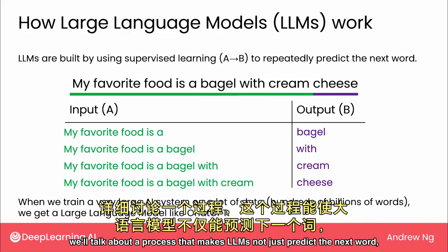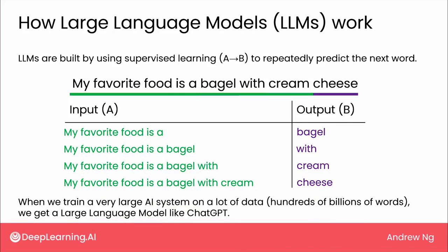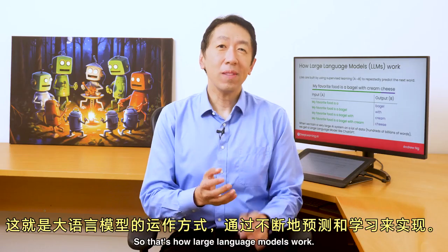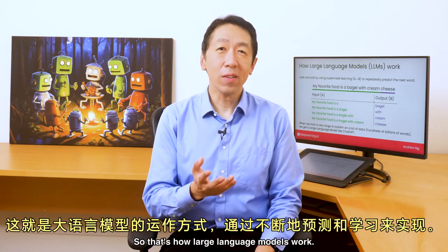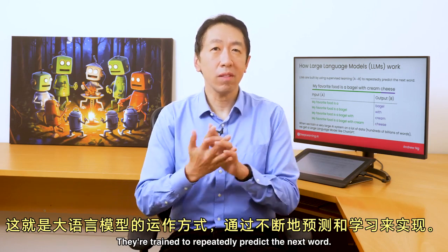we'll talk about a process that makes LLMs not just predict the next word, but actually learn to follow instructions, and also be safe in what it outputs. But at the heart of LLMs is this technology that's learned from a lot of data to predict what is the next word. So that's how large language models work — they're trained to repeatedly predict the next word.